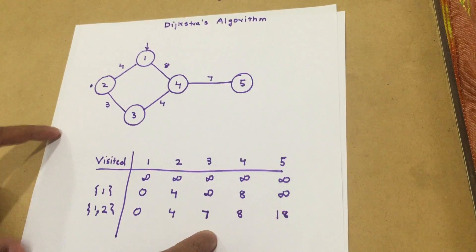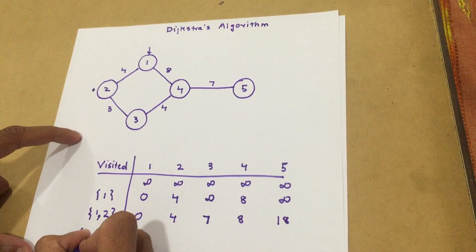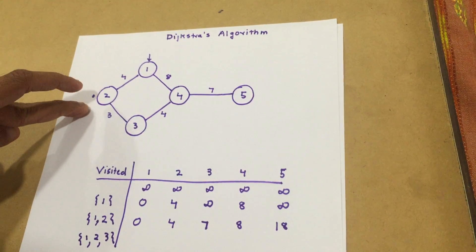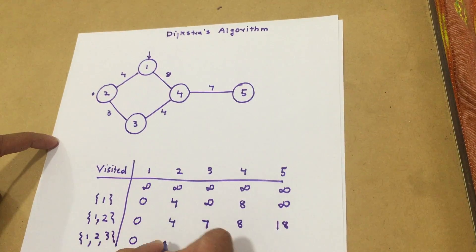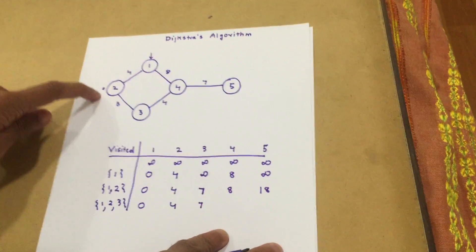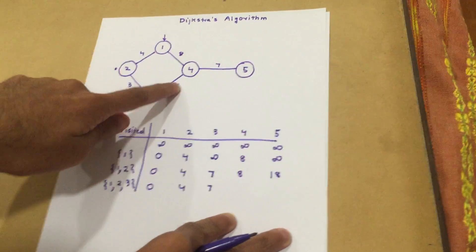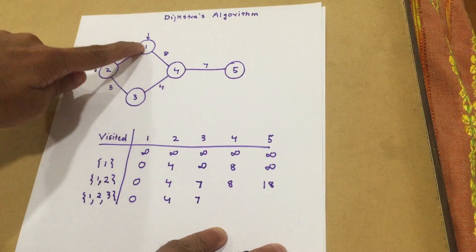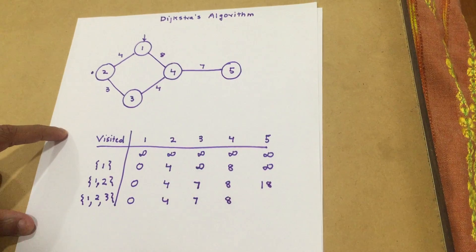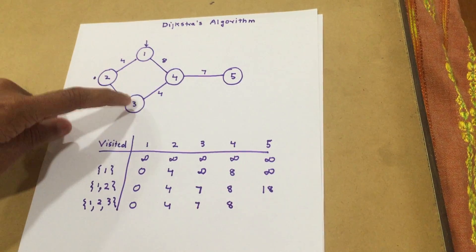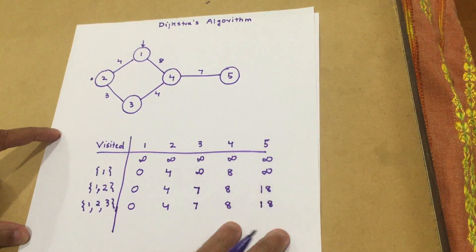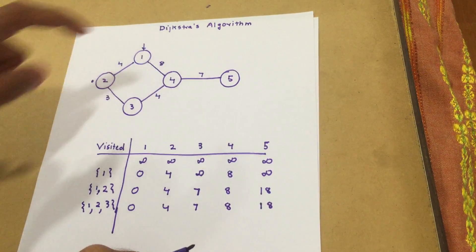We've now visited one and two. Among the remaining distances — seven, eight, and eighteen — the smallest is seven. So the next node we visit is three. Node three is connected to two and four; since two is already visited, that leaves us with four. Now the distance to reach four through three would again be eleven, but the distance from one to four is already eight, so we cannot change it — it stays eight. For five, the distance through three remains eighteen. Between eight and eighteen, eight is smaller, so next we visit node four.